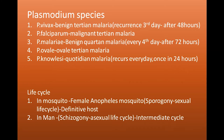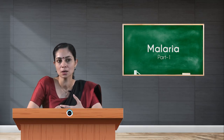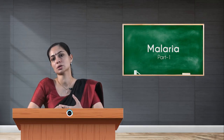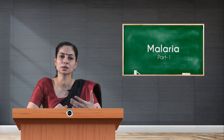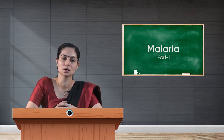Tertian malaria is where the symptoms recur after every third day, that is after 48 hours. In tertian malaria, we see mainly two species: Plasmodium vivax and Plasmodium falciparum. In Plasmodium falciparum, it is called malignant tertian malaria because it can lead to many complications.